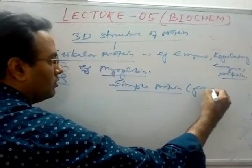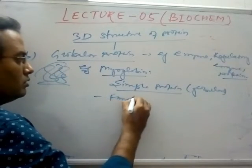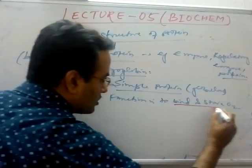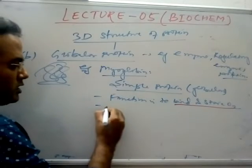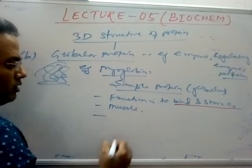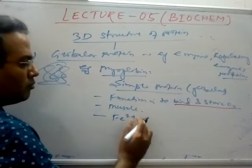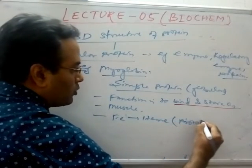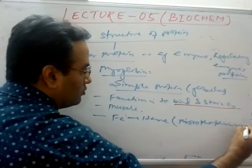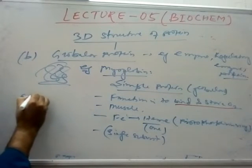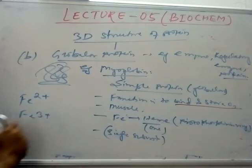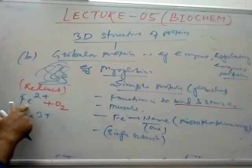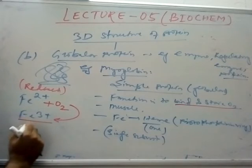Myoglobin is a very simple globular protein. Its function is to bind and store oxygen — it is present in muscles. It contains iron in the form of heme, which is also called the protoporphyrin ring. It is a single subunit. Iron is present in either Fe2+ or Fe3+ form; iron always binds with oxygen in the reduced Fe2+ (ferrous) form and can convert to the Fe3+ (ferric) oxidized form.